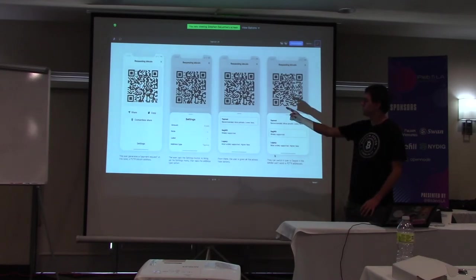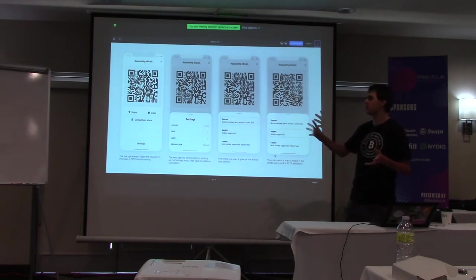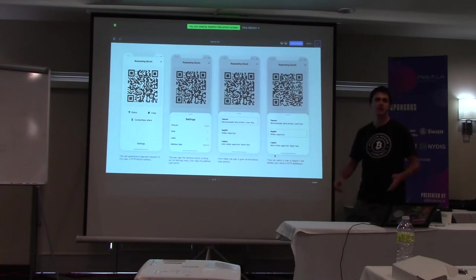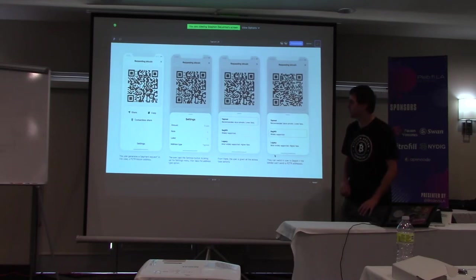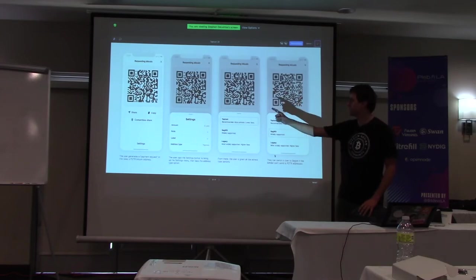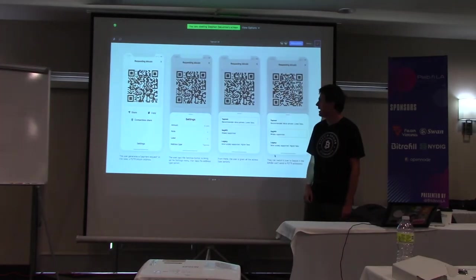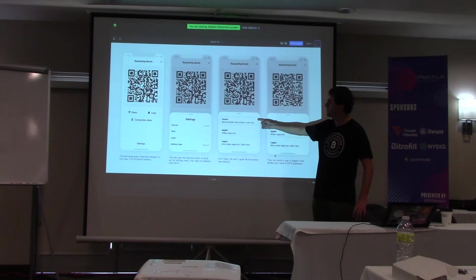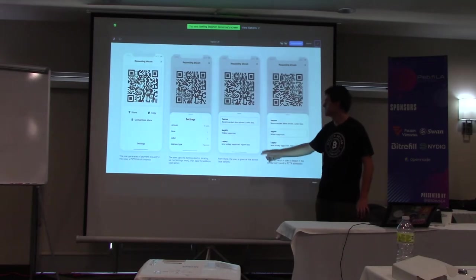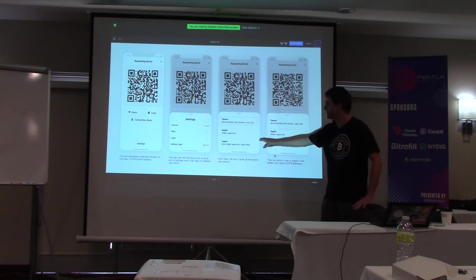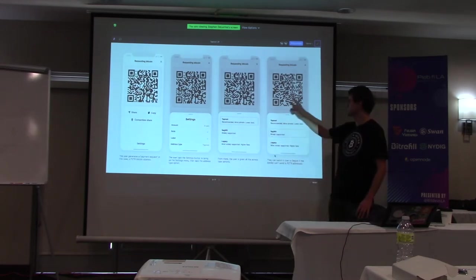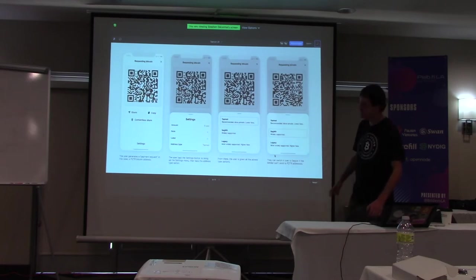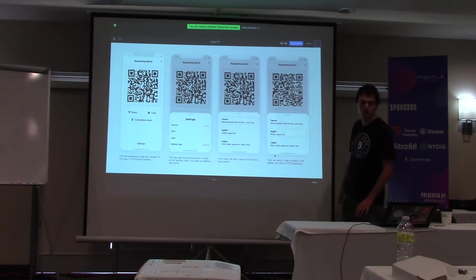For the sake of simplicity I'll assume this is not a lightning wallet — just a typical on-chain wallet. They've gone to the request screen. By default it's generated a pay-to-Taproot address. There's a little settings tab they can pop open. There's an 'address type' option — if they tap it, it gives them a menu: Taproot, recommended, more private, lower fees; SegWit, widely supported; Legacy, most widely supported but higher fees — we put that at the bottom and discourage it. They could still choose SegWit if they needed to, and the QR code switches right over.